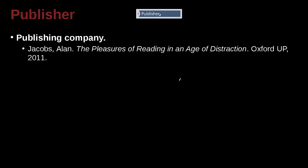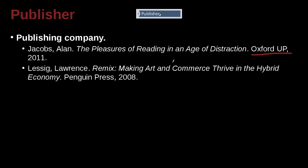When we look at publishing companies, we've already seen that Oxford University Press is an example — they come at the end. Here's another example: Penguin Press. So after you finish explaining who was the author, what was the name, and what's the name of the larger container, then comes a period and the publisher.